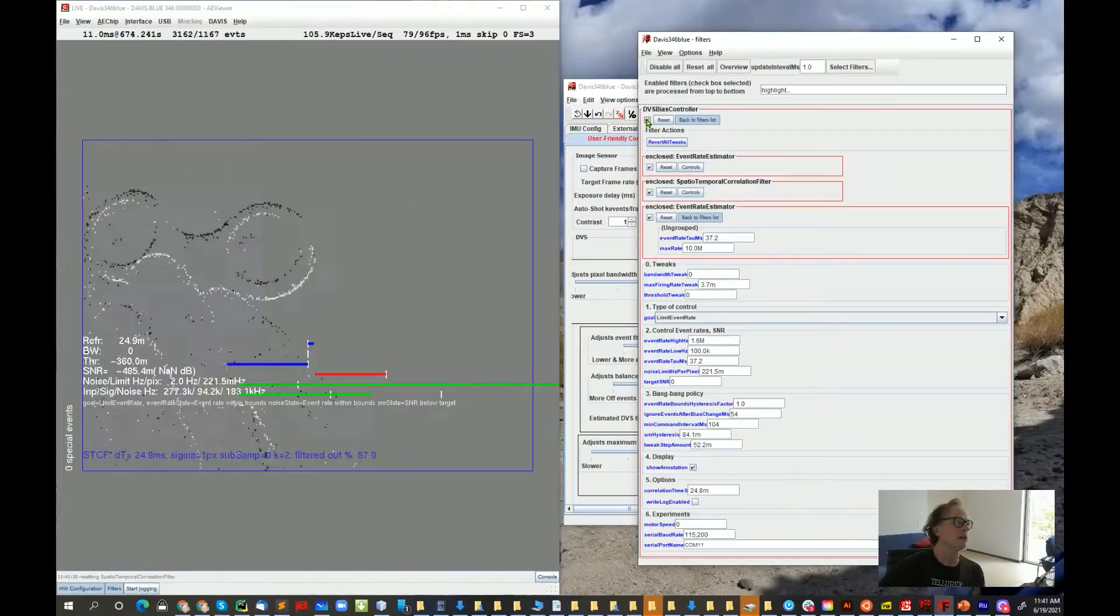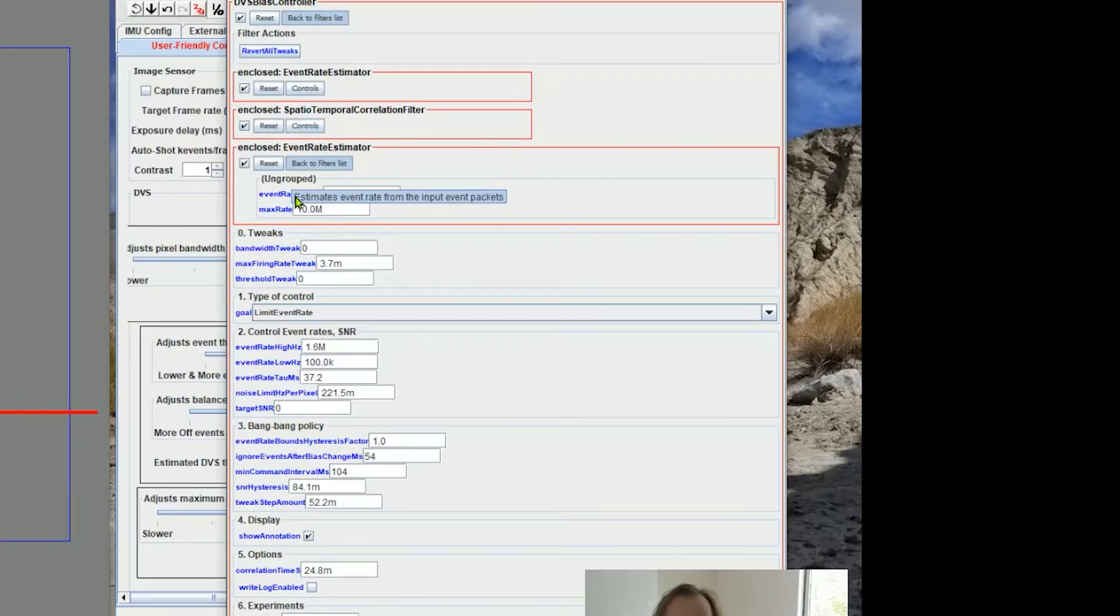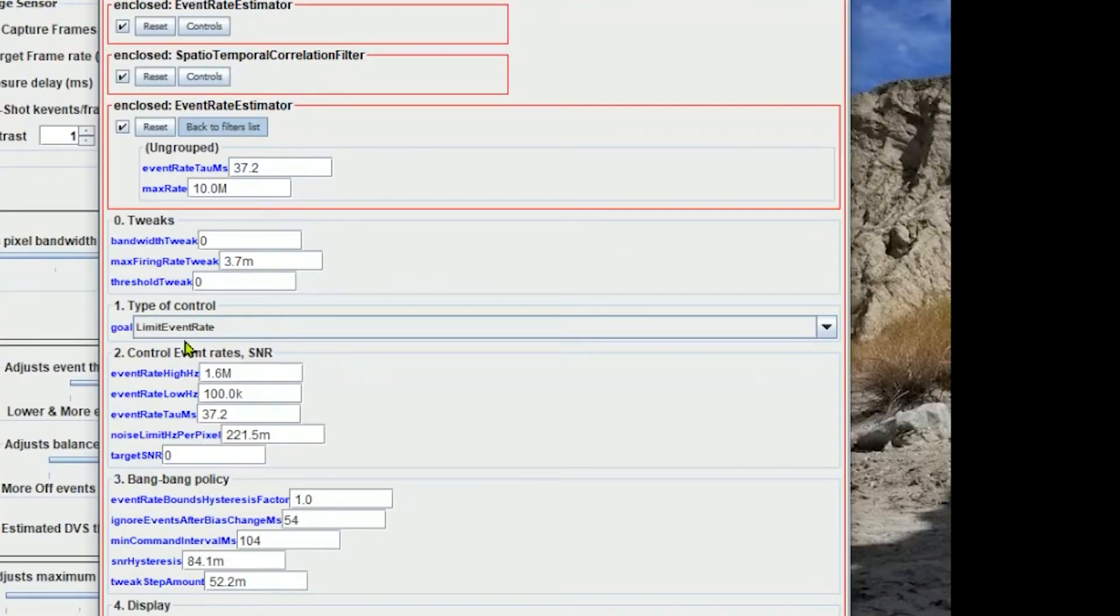Now in this DVS bias controller, which is the algorithm that we report in the paper, we've selected the type of control to limit the event rate. We set the high limit to 1.6 million events per second, and we've set the tweak step amount to 50 millis per control step, and we've set the min command interval to 100 millisecond.